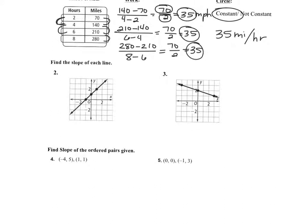Okay, number two: find the slope of the line. How do you find slope? What over what? Rise over run. Now, you're welcome to figure out what two of those numbers are and plug it into y2 minus y1 over x2 minus x1, but it's way quicker to count your rise over run.